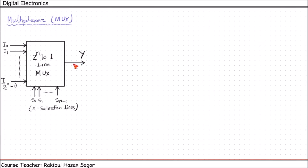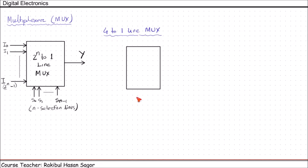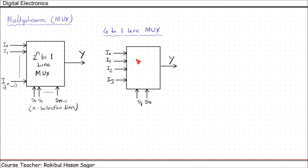Let us see an example using a 4-to-1 line MUX. In a 4-to-1 line MUX, there will be 2 selection inputs and 4 inputs will be available, with 1 output. This is S0, this is S1, this is I0, I1, I2, I3, and this output Y. This is called a 4-to-1 MUX.